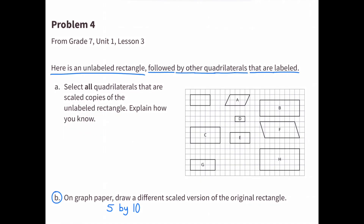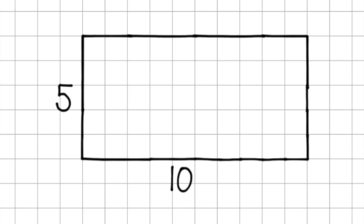Part B: on graph paper, draw a different scaled version of the original rectangle. I've decided to draw one with dimensions 5x10. Here's a scaled copy of the original unlabeled rectangle with a base of 10 and a height of 5.